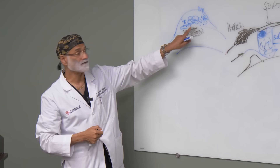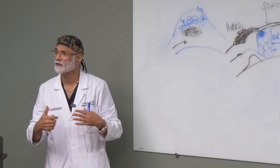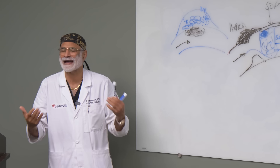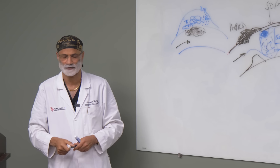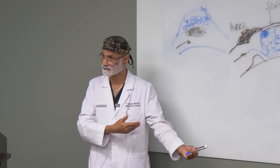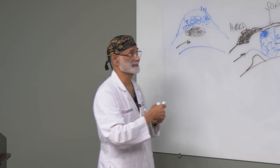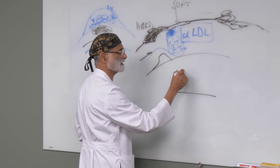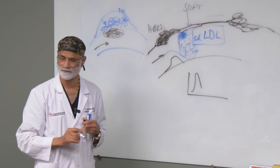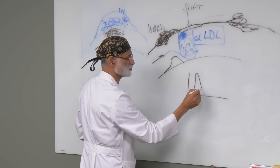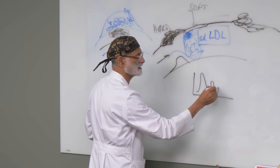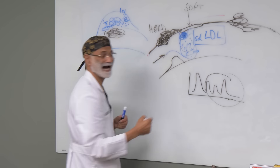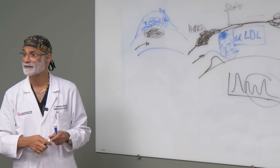What causes the inflammation is small, dense LDL — abnormal LDL particles. So how do you make abnormal LDL particles? If you do an advanced lipid test, it will tell you the sizes of your LDL. You'll get a peak of LDL of normal size, and then you'll get additional peaks of small, dense particles. These are abnormal LDL particles — they've been damaged.